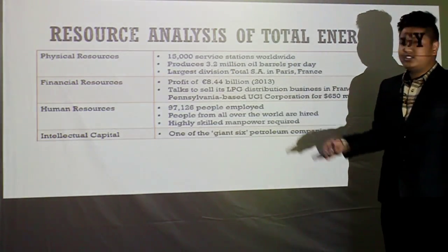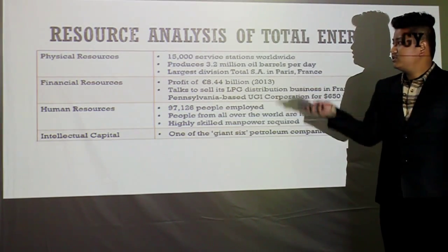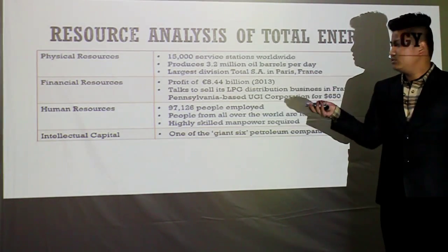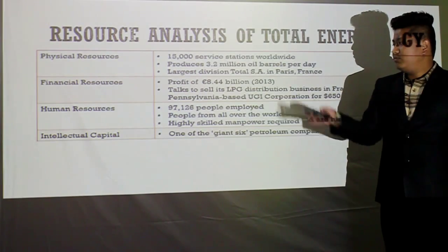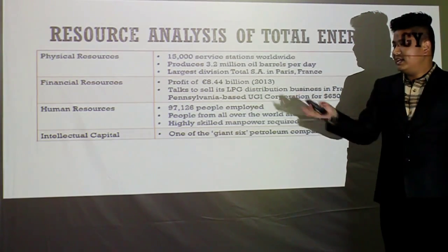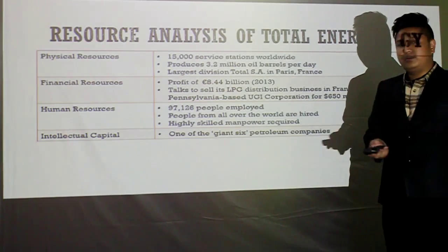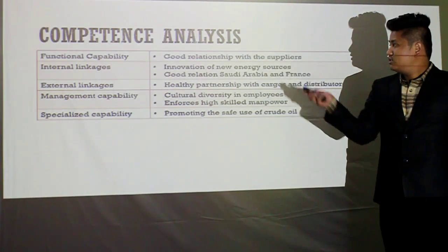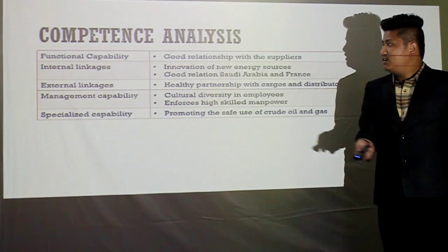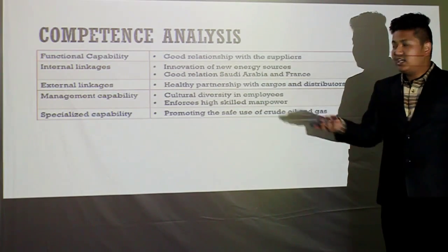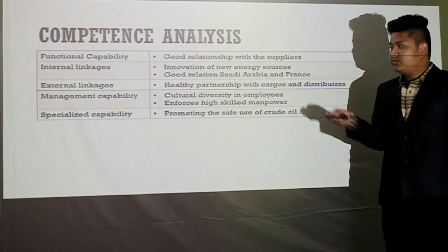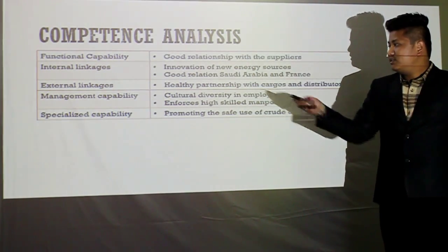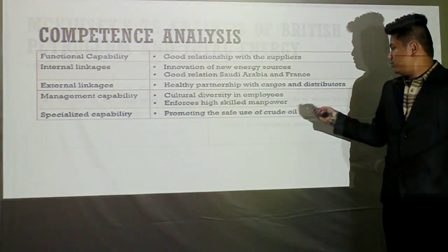Resource analysis of Total Energy: physical resources include 15,000 service stations worldwide. Financial resources: a profit of over 8 billion euros in 2013. Human resources: over 97,000 people worldwide. Intellectual capital: one of the giant six petroleum companies in the world. Competence analysis: good relationships with suppliers, good relations with South Europe and France, healthy partnerships with cargo and distributors, cultural diversity in employees, and promotion of the safe use of crude oil and gas.